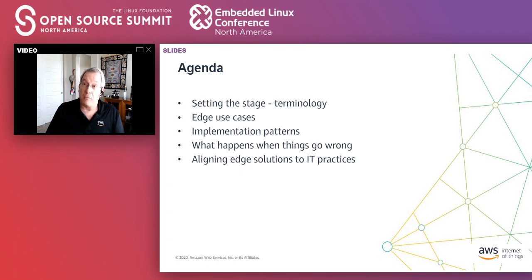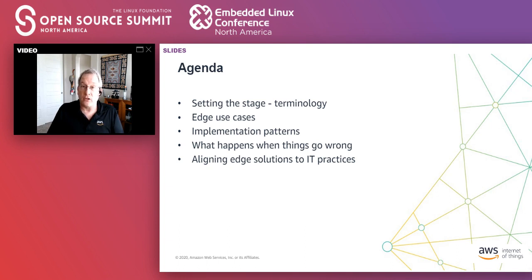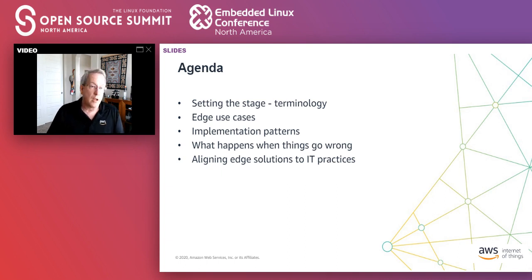Next, we'll go through what happens when things go wrong. These are devices that are out in the field, so unlike in a data center or controlled environment, there's a lot of things that can go wrong — but a lot of ways we can address that through edge computing capabilities. Finally, we'll pull it all back and discuss how to leverage existing IT or OT practices. We'll take questions at the end through the chat mechanism, and there's also the AWS booth in the Gold Hall for additional questions.